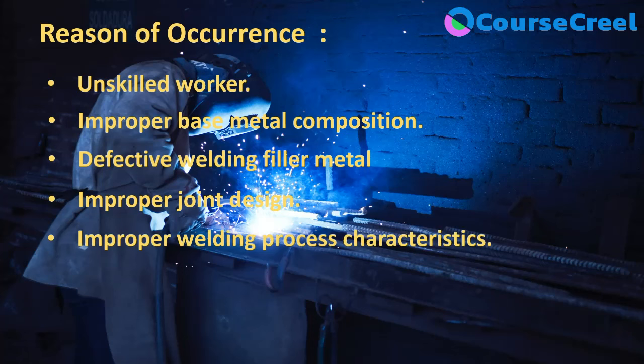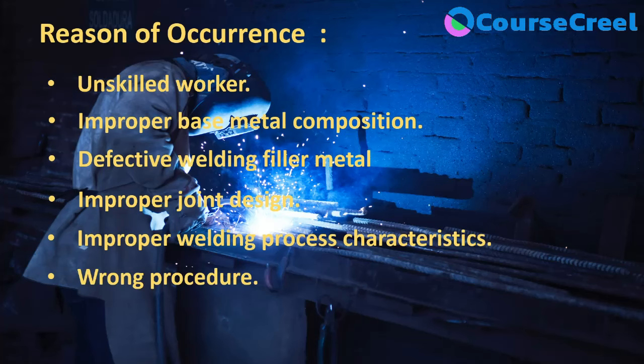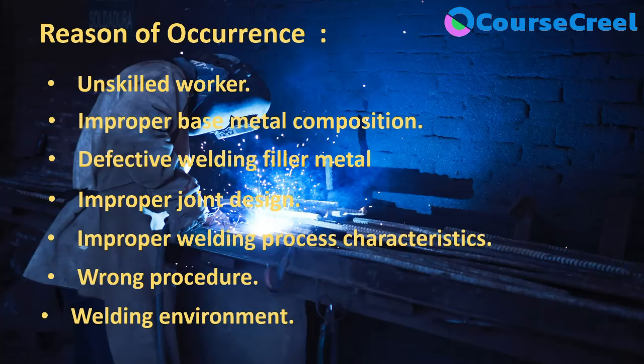Next is improper welding process characteristics. We have to define proper characteristics during the welding process; if they are not proper, it can create welding defects. Another point is wrong procedure — if the procedure followed by the worker is not proper or not right, that can create welding defects. Finally, welding environment: if the environment is not suitable for welding — like temperature, moisture, wind, etc. — that can also create welding defects. These are the few reasons for the occurrence of welding defects.